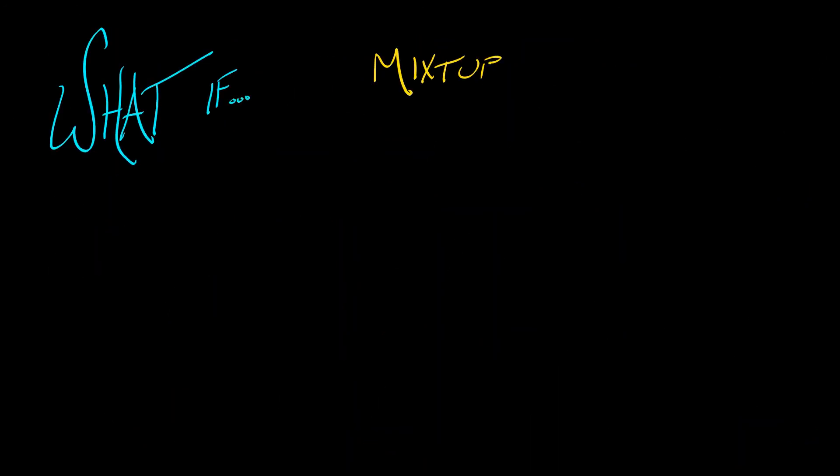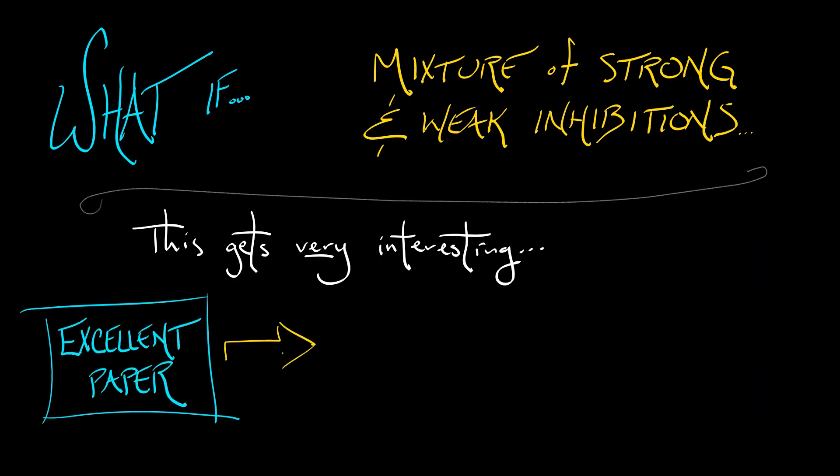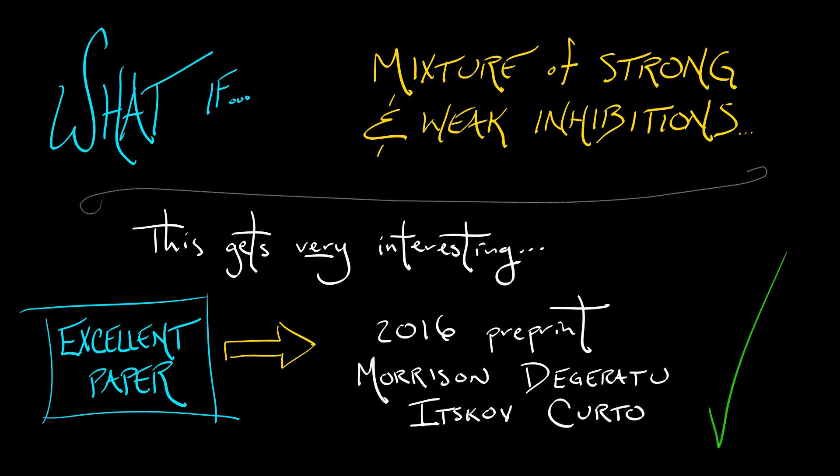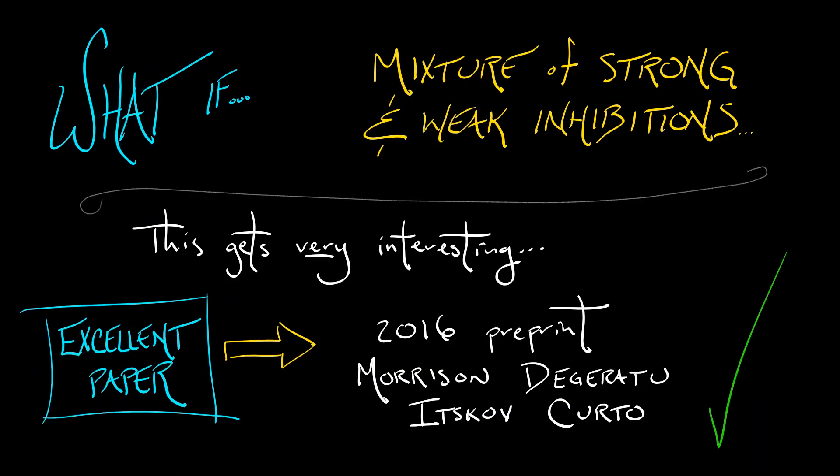Well, what if we have a mixture of strong and weak inhibitions? That is indeed where things get very interesting. And it is at this point that I must point out to you an excellent paper, the 2016 preprint of Morrison, Degaratu, Itskov, and Kurto, where I learned about these threshold linear networks and where they prove a whole bunch of fascinating results. This is a very well-written paper. You can read it with the things that we have learned together, and you can understand almost everything that is in that paper. I'm not going to stop here. We're going to keep going and talk about a couple of the results that are contained therein.